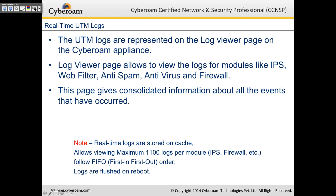Real-time logs are stored on the cache of the appliance, allowing a maximum of 1,100 logs per module, such as IPS or Firewall. It follows a first-in, first-out order — if the cache is full for a particular module, the oldest logs are deleted to make space for new ones. Logs are flushed on reboot, so they won't be available after a restart. However, reports stay on the appliance and are not deleted on reboot.